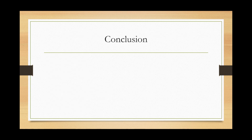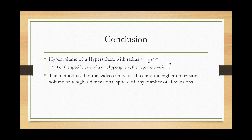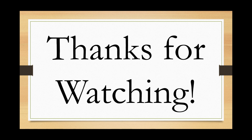We have now accomplished the goal we set at the beginning of the video: to find the hypervolume of a hypersphere. The formula is (1/2)π² r⁴, where r is the radius. If r = 1 (a unit hypersphere), its hypervolume is π²/2. If you're interested in finding the higher-dimensional volumes of even higher-dimensional spheres, you can use a similar method to find the volume of a sphere in any dimension. The really interesting thing about this topic is that it illustrates how math can be used to solve problems that our brains can't even completely comprehend. I think this is one of the beautiful things about math, and hopefully I've been able to share a little bit of that beauty with you all. Thanks for watching, and I hope to see you in the next video.